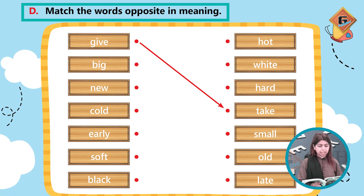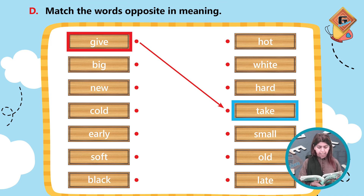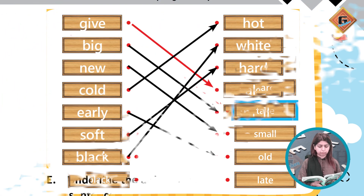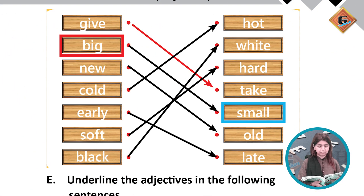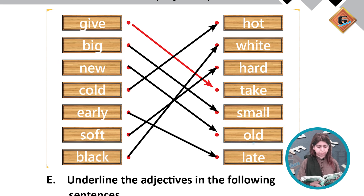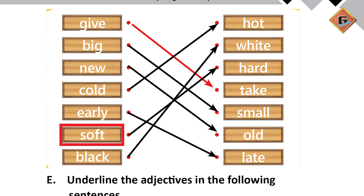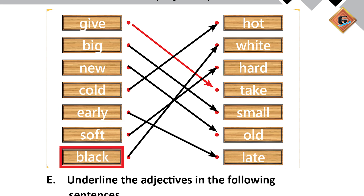Next we have: match the words opposite in meaning. Give — take. Big — small. New — old. Cold — hot. Early — late. Soft — hard. Black — white.